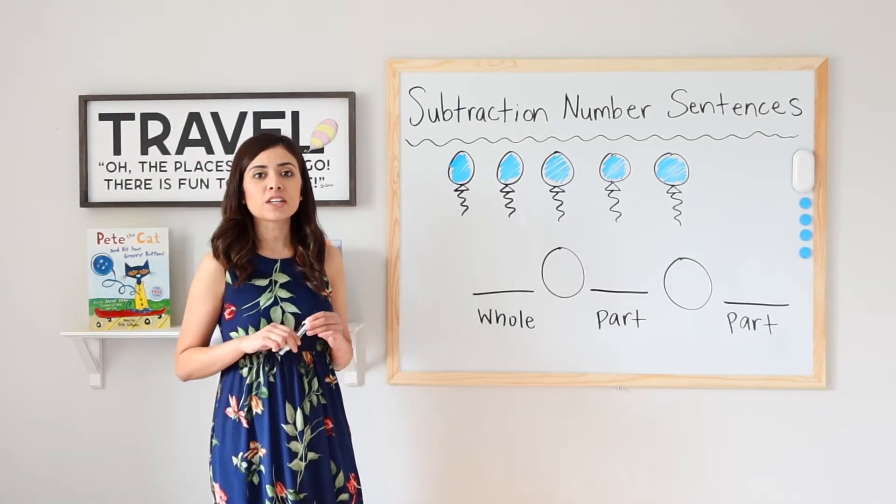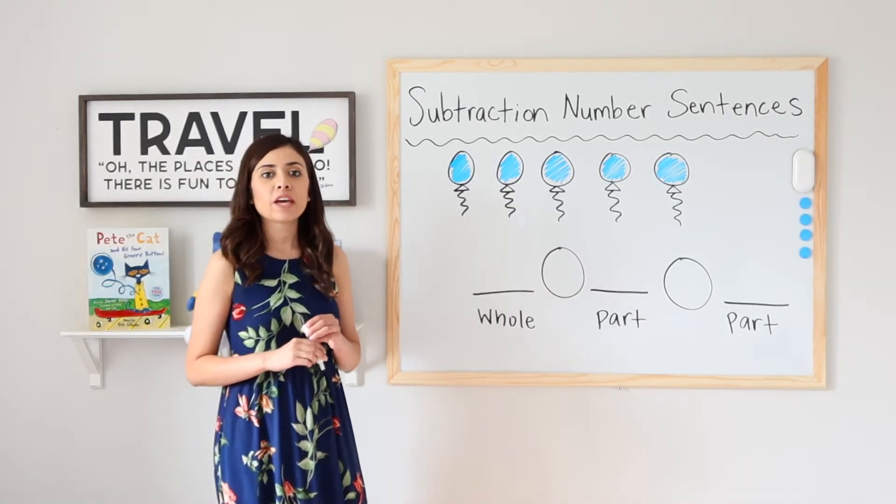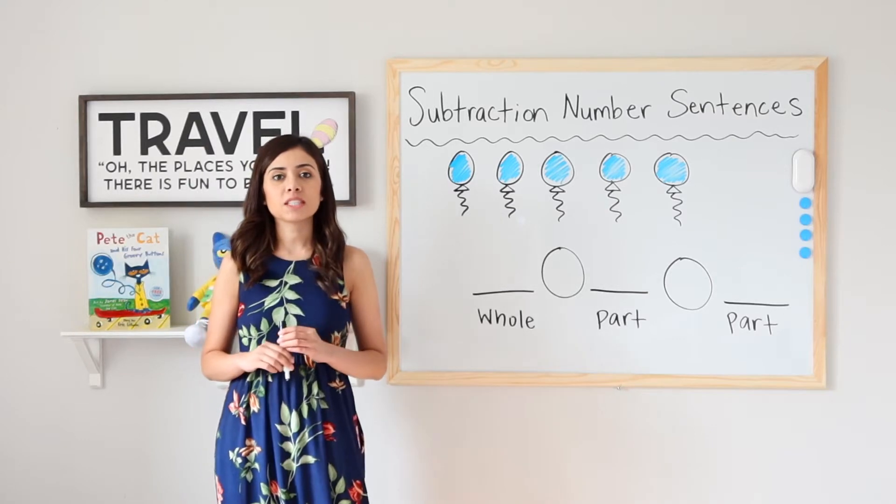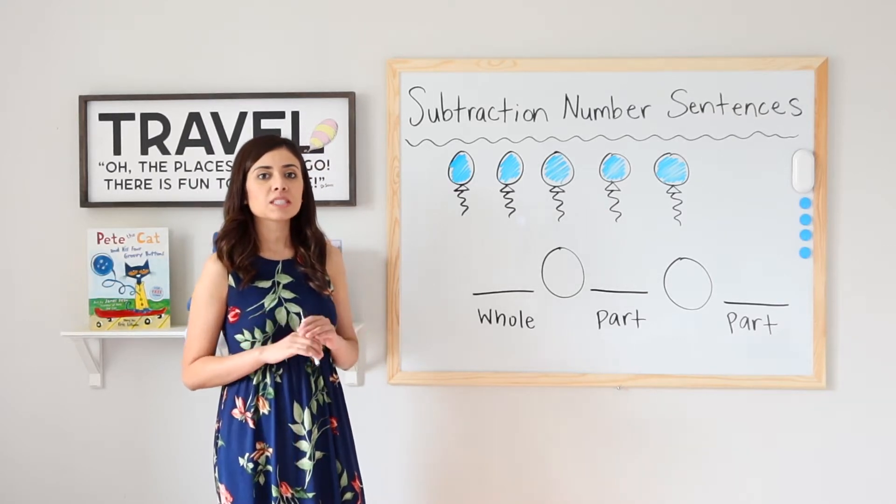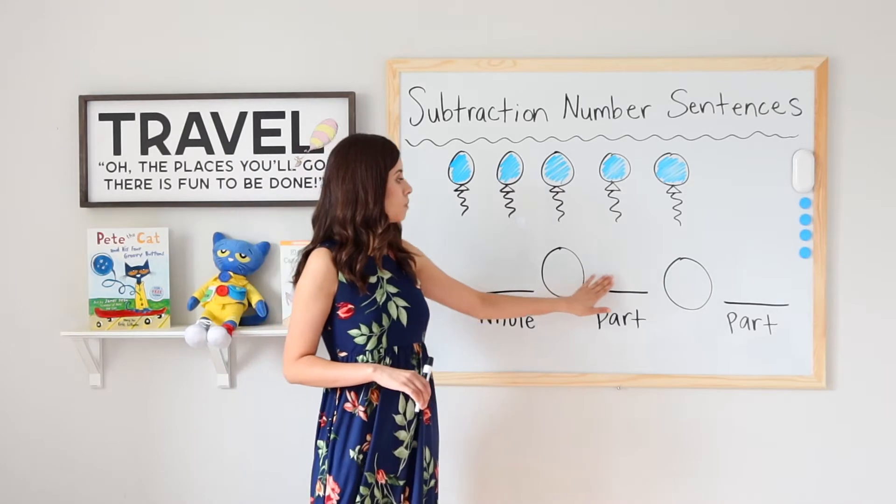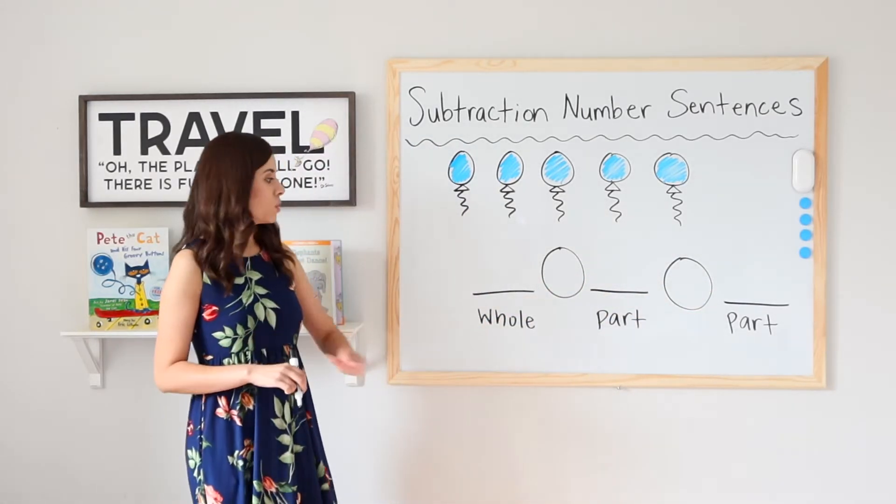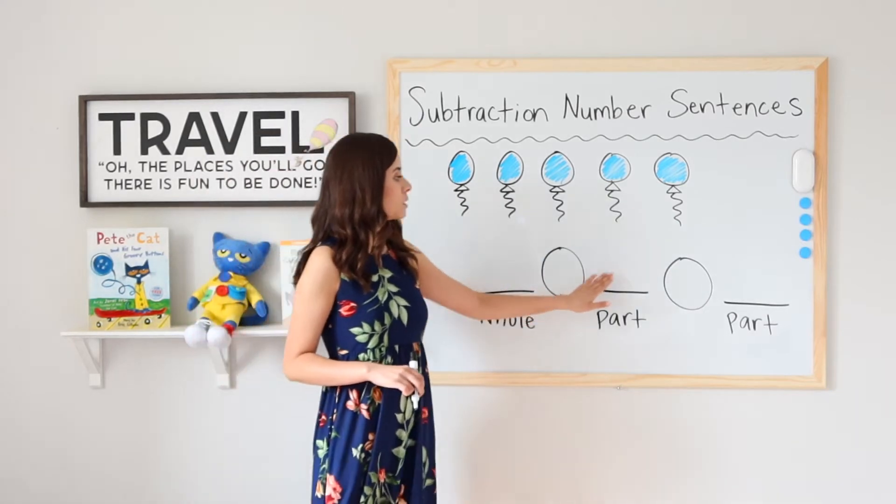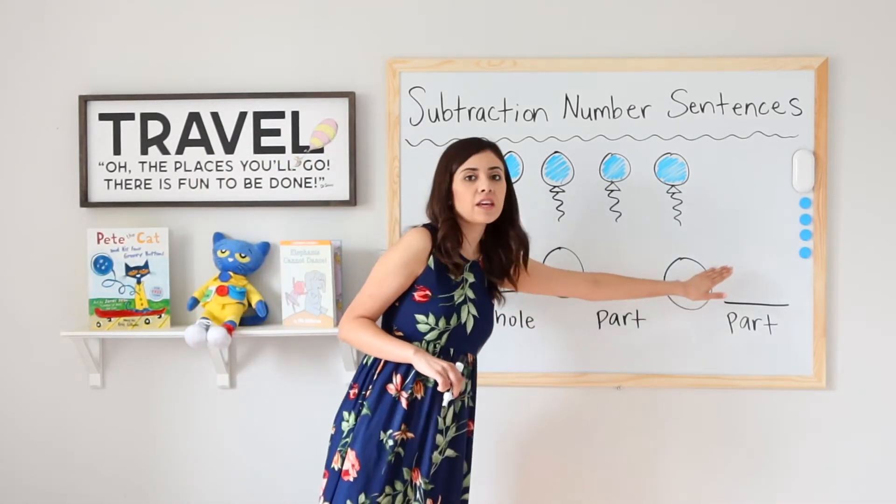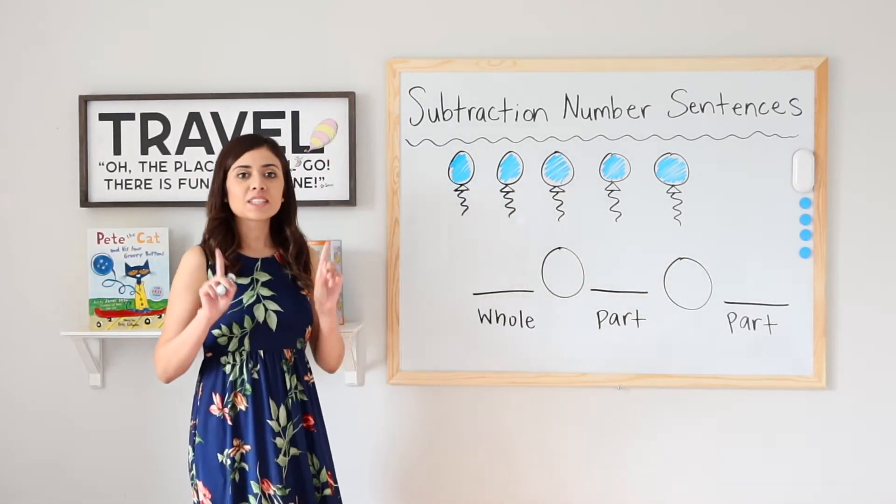So if you've seen some of our last videos, you know that we have practiced writing addition number sentences. For addition number sentences, we had part plus part equals whole. Now we are going to do whole minus part equals the other part. Let's take a look.